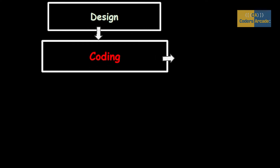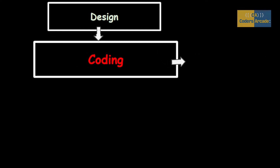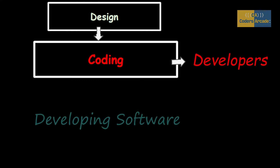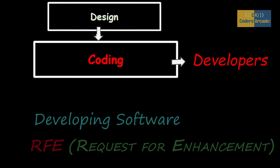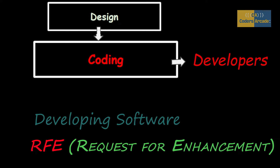Once after the Design stage, it goes to Coding. Developers will start developing the software according to the requirement. Please be sure that development is done strictly according to the requirement. Even if you have some idea about what could be added, you cannot assume something should be there unless it is in the requirement. If it is a good idea, you can always give an RFE — Request for Enhancement — but you can never add it on your own.